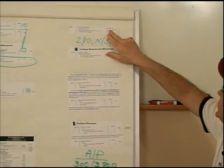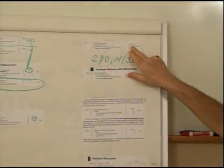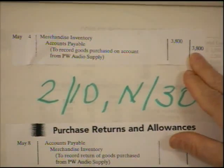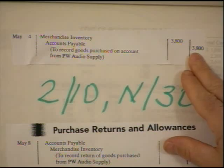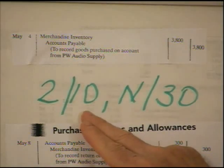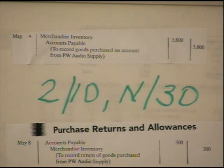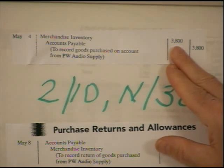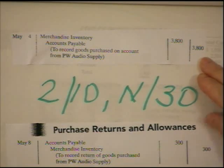We have a company making $3,800 worth of purchases on account with terms 2/10 net 30. They don't worry about the discount originally — they record the payable at the full amount. So the journal entry is: debit merchandise inventory, putting it into their inventory, and credit accounts payable. When terms like 2/10 net 30 are given, you know it's on account and not cash, because cash would have been paid up front. So they now have inventory on their books of $3,800 and accounts payable of $3,800.